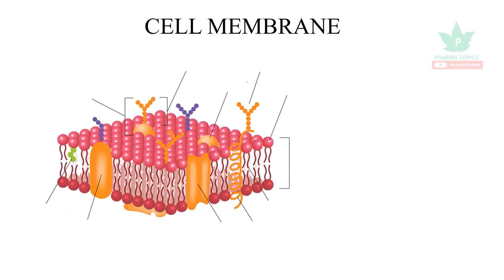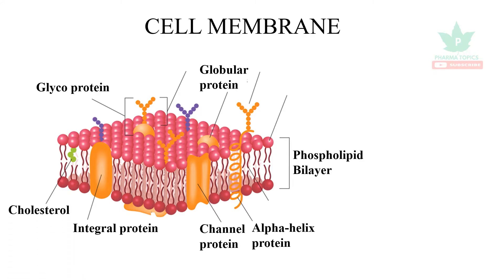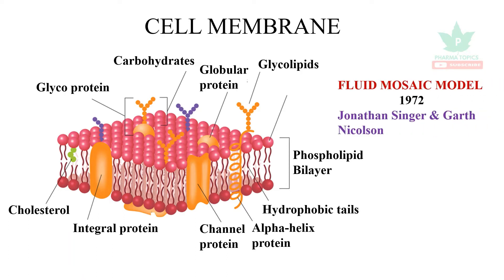Let us see about the cell membrane. It has proteins, carbohydrates, and fats. The protein parts include globular protein, glycoprotein, integral protein, channel protein, alpha helix protein, and cholesterol. It also contains phospholipid bilayer, glycolipids, carbohydrates, and hydrophobic tails. The fluid mosaic model was proposed in 1972 by Jonathan Singer and Gar Nicholson.